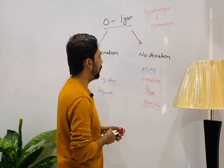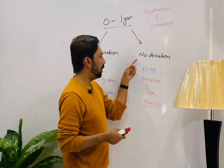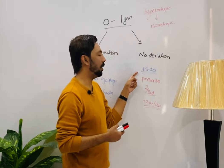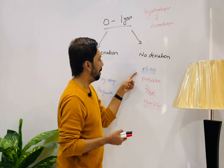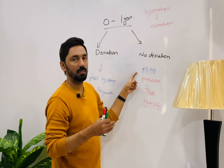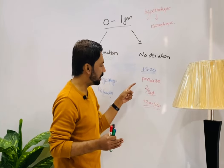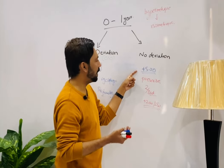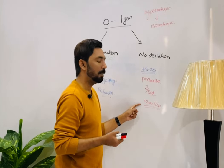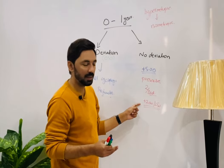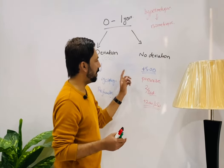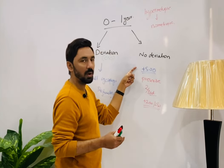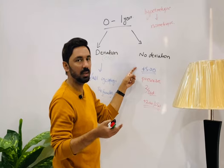For example, if full correction is plus five and there is no deviation, you will prescribe two-thirds of the prescription — you can prescribe plus two or plus two point five. But if the hypermetropia is lower than plus five — like plus one, two, three, or three point five — you will not prescribe any prescription.